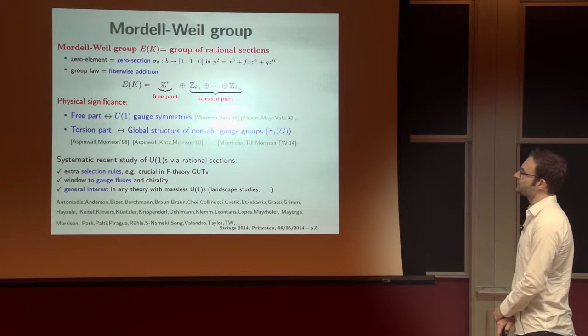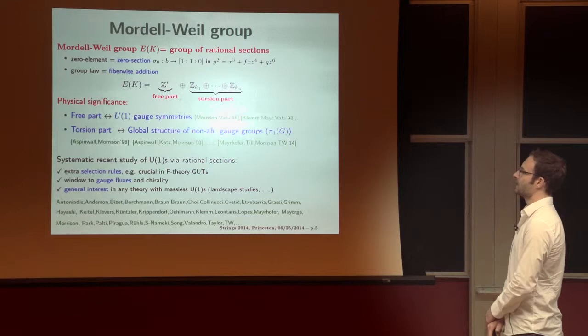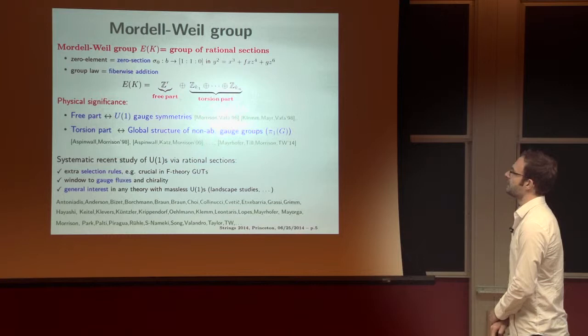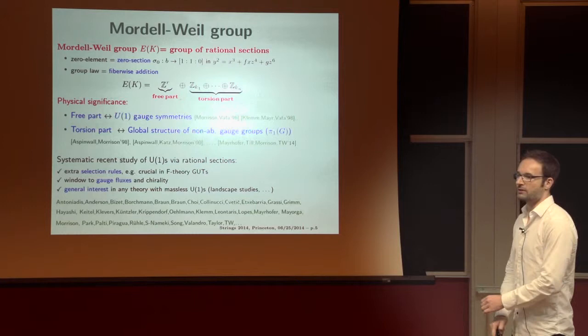And these two have very different meanings for physical applications. Namely, the free part is in one-to-one correspondence with the U(1) gauge symmetries, as has been known since the very early days and been investigated in more detail recently. And the torsion part is associated with the global structure of the non-abelian gauge group.